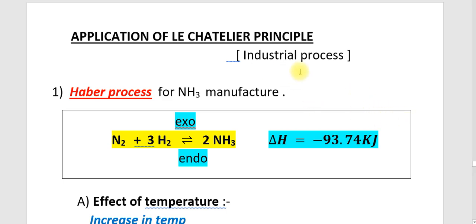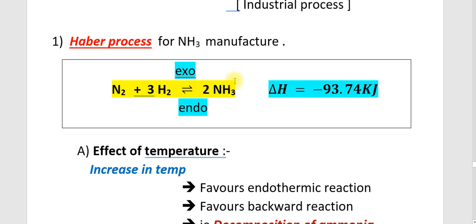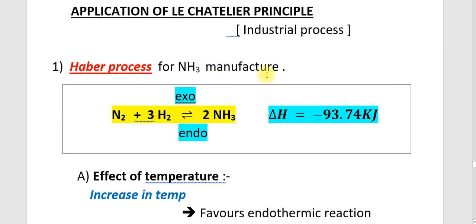We will discuss the first industrial process, that is the Haber process or the manufacture of ammonia. The Haber process: N2 plus 3H2 gives a reversible reaction to form NH3.